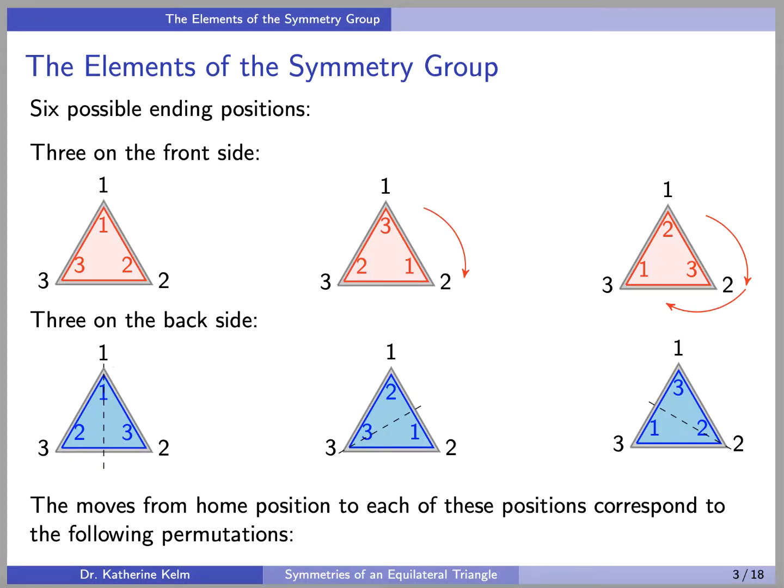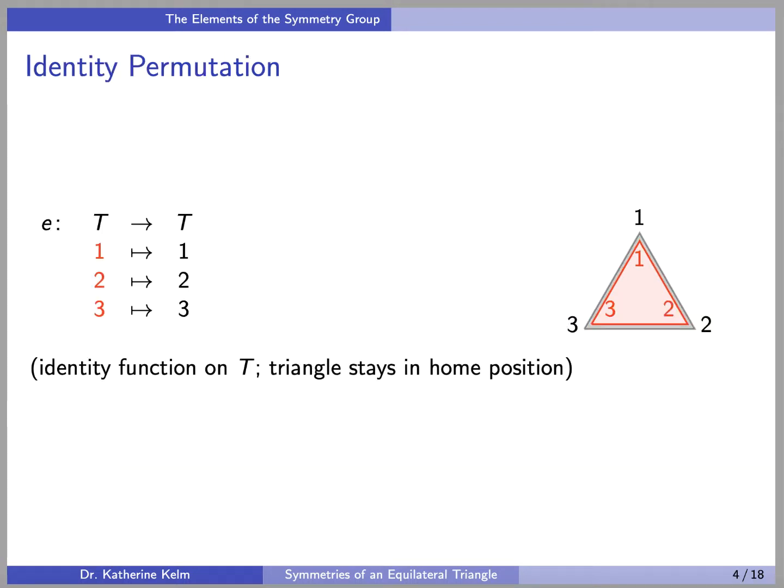We are going to have 6 permutations corresponding to the 6 possible ending positions. So there is going to be 3 on the front side and 3 on the back side. The moves from home position to each of these positions correspond to the following permutations. First, we have the identity permutation, which is just the identity function on T. The triangle stays in home position, the element 1 gets sent to itself, the element 2 gets sent to itself, and the element 3 gets sent to itself.